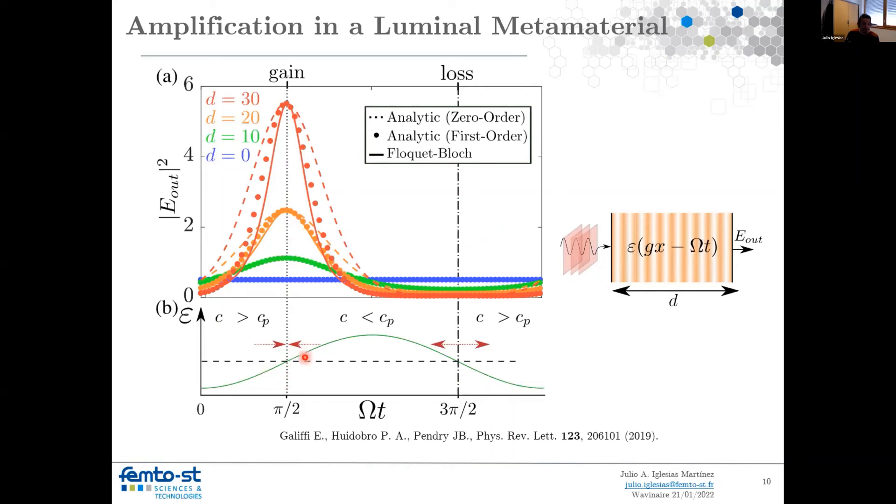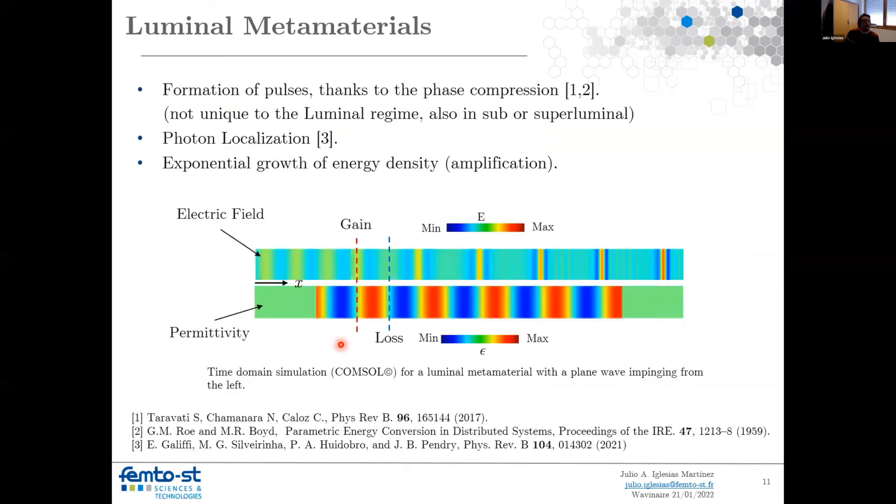When the change of this material property is at a maximum, we have gain. And when we have a minimum, we have loss. This, as you can see here also from this image, the gain and loss are going to produce pulses.